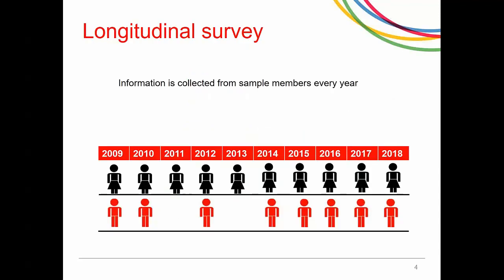The second point to note is that this is a longitudinal survey, so information is collected repeatedly — in this case every year. Although an attempt is made to interview the sample members every year, in some years they may not participate because they could not be contacted or they were busy. In this picture here, you can see two such cases: the top row represents a person who was interviewed every year, and the bottom row shows a person who was interviewed intermittently.